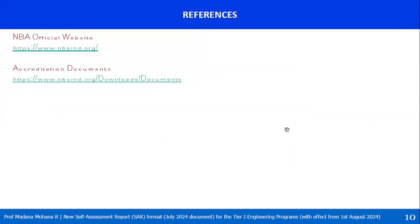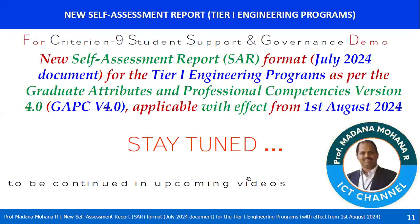That's all about Criterion 8, Continuous Improvement. This is the NBA official website www.nbaind.org. From this website, you have to see the accreditation documents — you can get the pre-qualifiers, self-assessment report, evaluation criteria and evaluation guidelines of Tier 1 with July 2024 document. From January 2025 onwards, only the new format is available. In our upcoming videos, we will see Criterion 9, Student Support and Governance. Till then, stay tuned. Thank you.